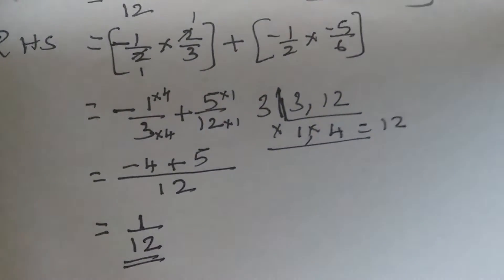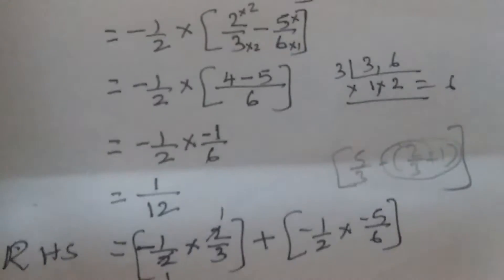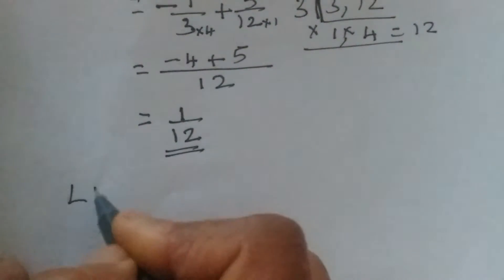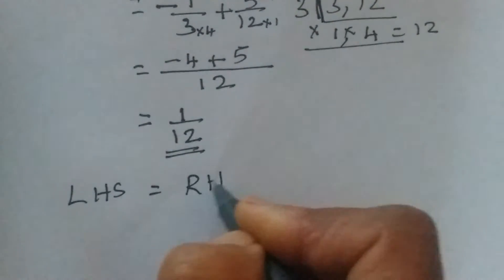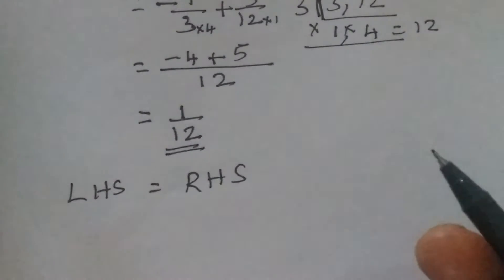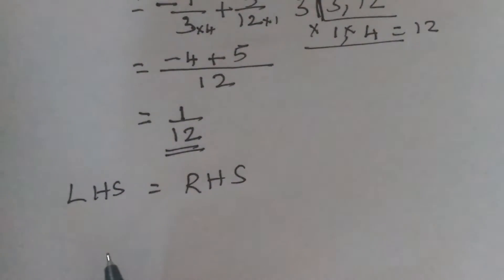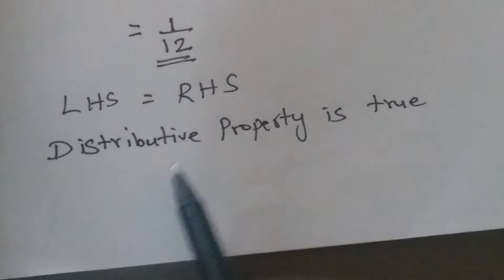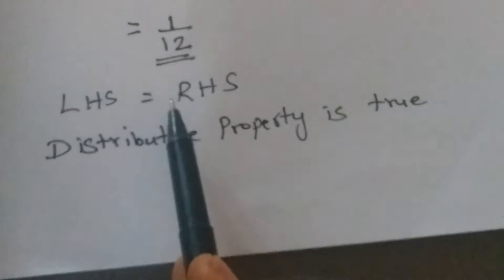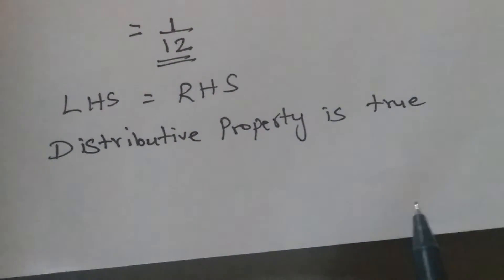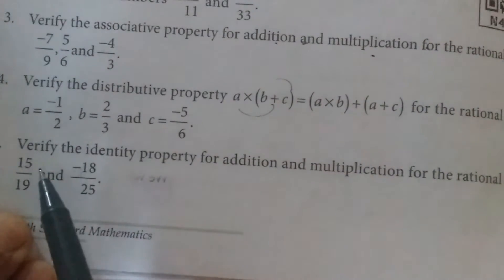LHS = 1/12 and RHS = 1/12. Since LHS equals RHS, we can say the distributive property is true. We have verified the distributive property and both sides are equal. Now let us see Question Number 5.